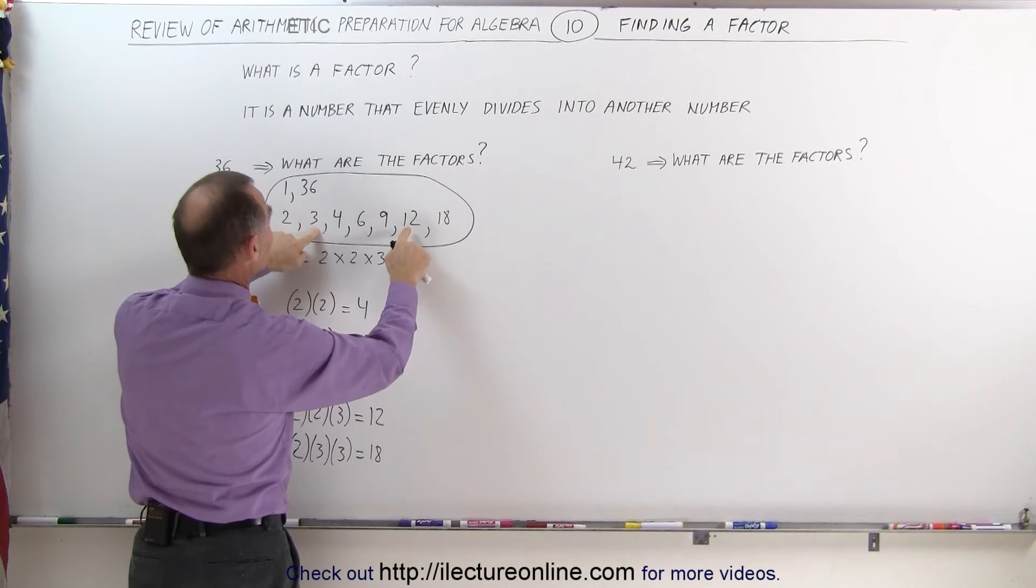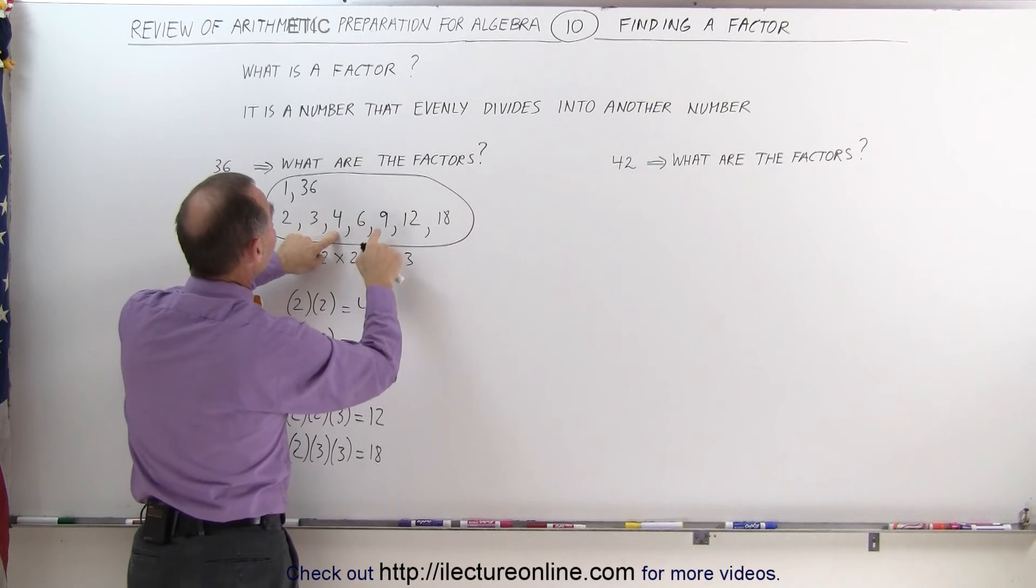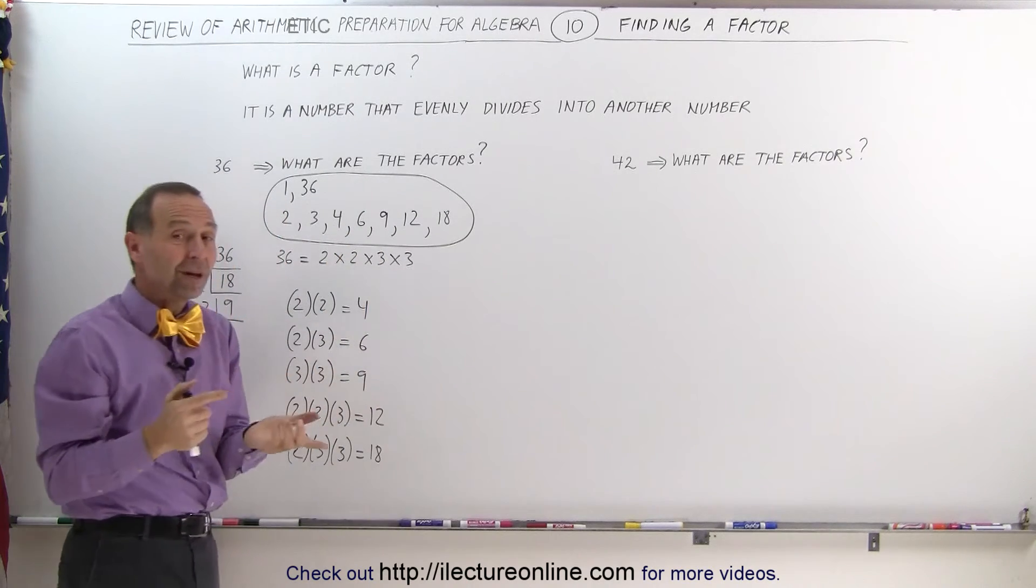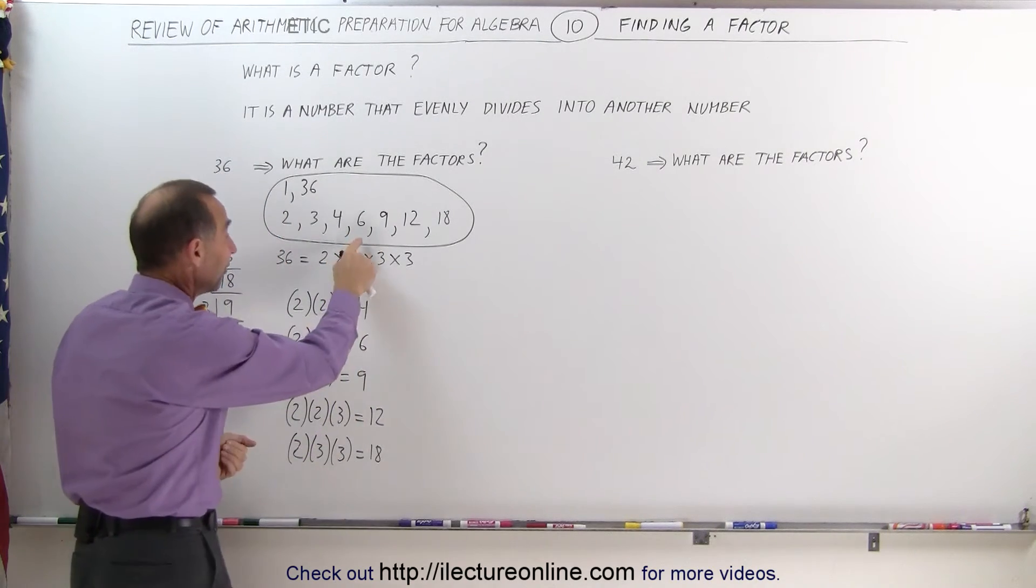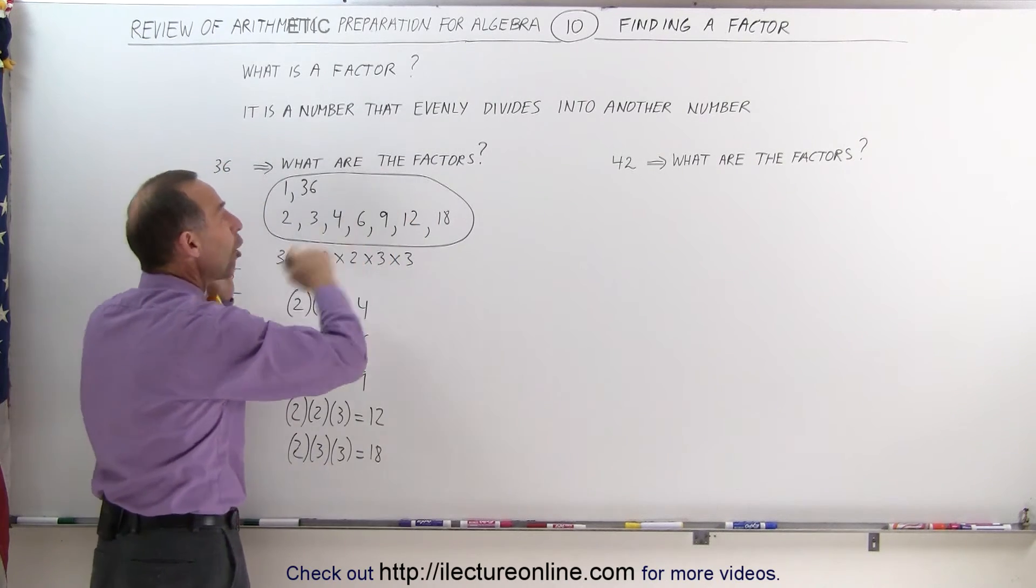How about the next two? 3 times 12, that gives you 36. How about the next one? 4 times 9, that gives you 36. And now, since you only have one number left, multiply it by itself. 6 times 6 also gives you 36. That shows that you've found all of the factors.